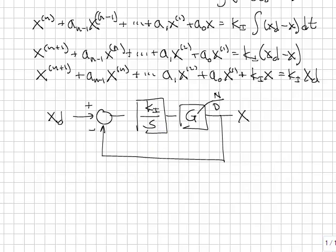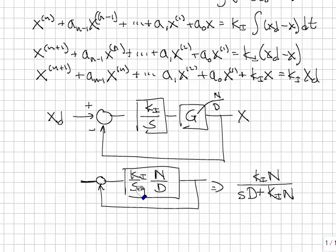Let's let g of s be the ratio of two polynomials, n of s over d of s, and follow through with the math. Combine the blocks, do the block diagram algebra, and we're left with this transfer function here.